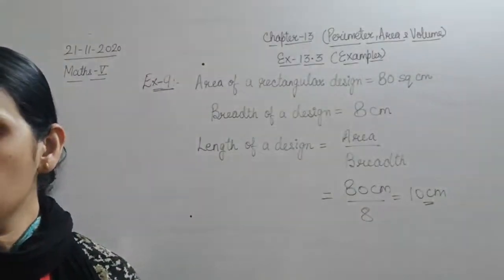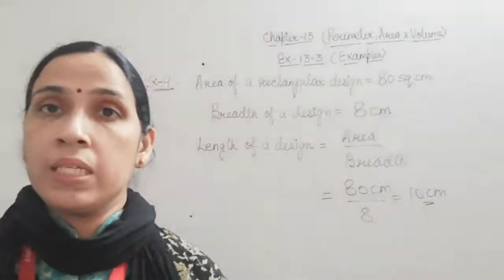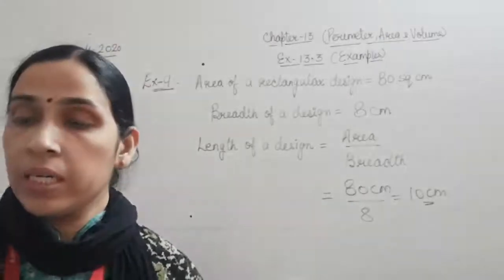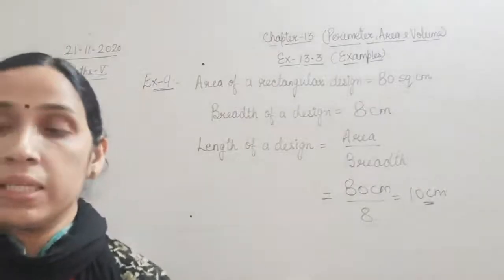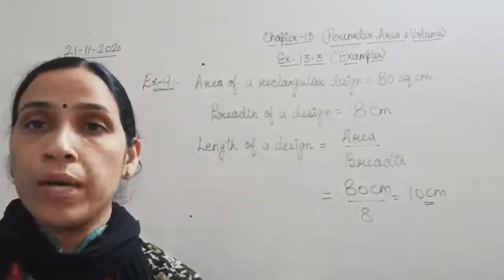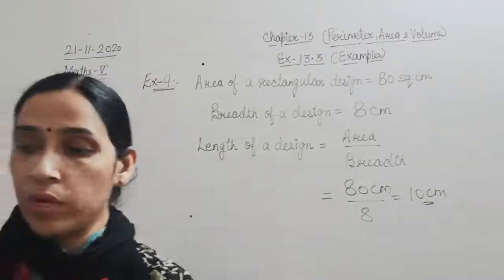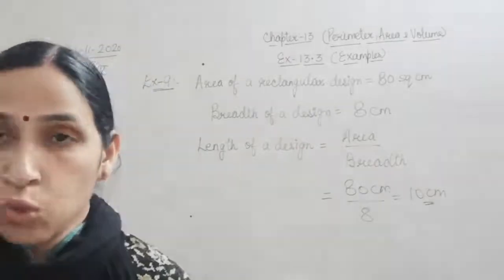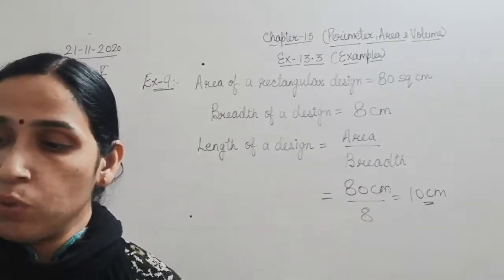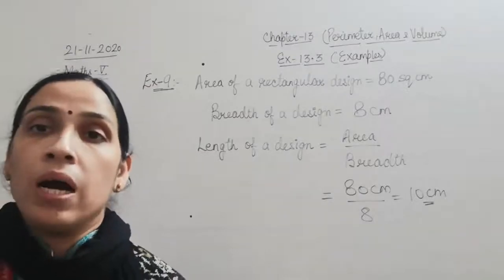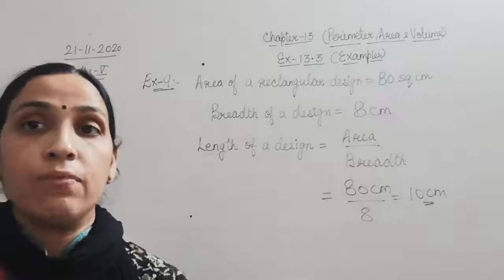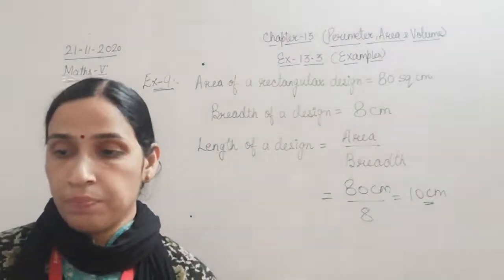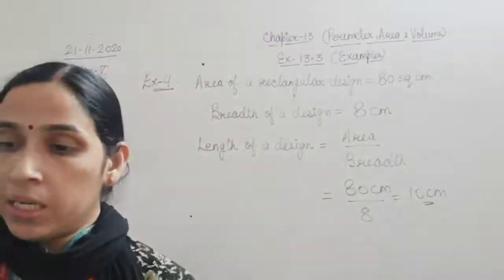Now we are left with only one question — Question 10 of exercise 13.3. A room is 680 cm long and 320 cm wide. It is to be paved with square marble tiles of side 40 cm. Length and breadth are given; find area of the room, then area of one square tile, and divide to get number of tiles required — same method as Example 8.